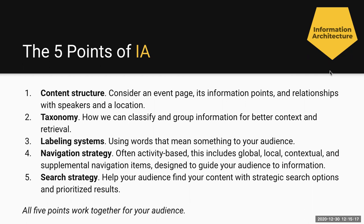Taxonomy is how things are classified and grouped — that helps with better context and retrieval. Labeling systems is all about the words that you choose to use based on what your audience recognizes. If they don't recognize it, it may not have the meaning that you hope.